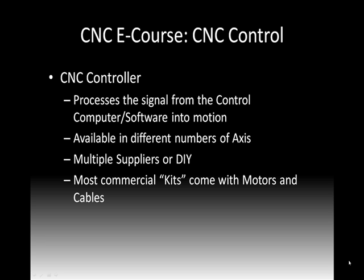The third piece is the CNC controller. That controller processes the signal from the computer and the software — the software spits it out, it goes out a cable to the controller, and it turns that signal into motion. There are a number of different suppliers out there, and you can also make these as a do-it-yourself kit. They're available in different axes configurations: two-axis, three-axis, or four-axis controllers. If you buy a controller from a supplier, most of those kits come with motors and cables as part of the package.